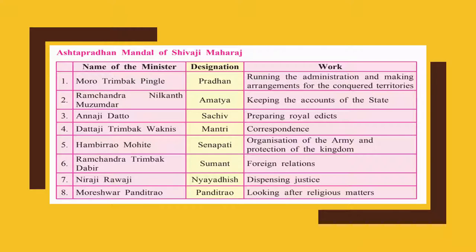Fifth was Hambira Mohiti, the Senapati, whose work was the organization of the army and protection of the kingdom — overseeing security, arranging troops, managing arms and ammunition, and supervising army training. Sixth was Ramchandra Trimbak Dabir, the Sumant, responsible for foreign relations. He handled talks with foreign delegates — Portuguese, British, Dutch, Mughals, and Nizam Shahi — and was present at all treaty discussions.